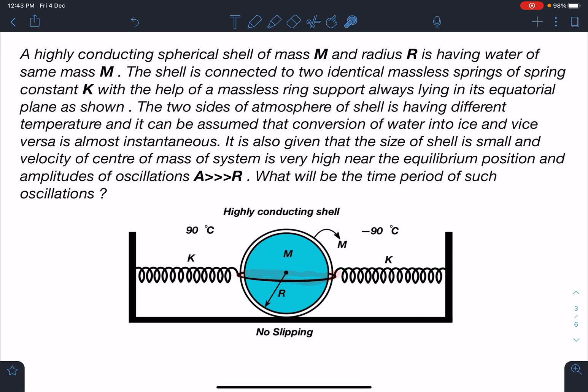The two sides of atmosphere of shell have different temperatures, and it can be assumed that the conversion of water into ice and vice versa is almost instantaneous. It is also given that the size of the shell is small and the velocity of center of mass is very high near the equilibrium position, and the amplitude of oscillations are very large compared to radius R. What will be the time period of such oscillations?